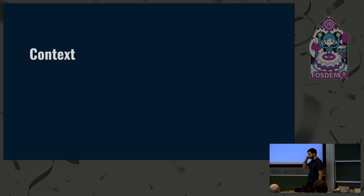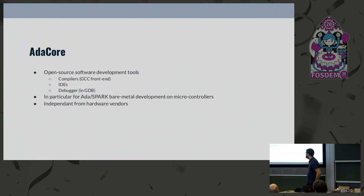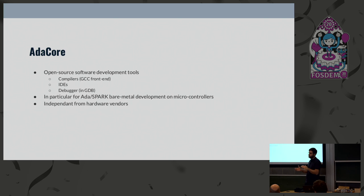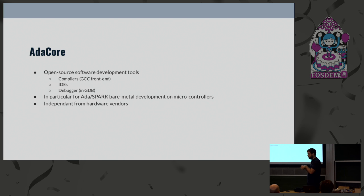What is this about? We'll start with some context, and then Corentin will explain what the project actually is. The context is that we work for an open-source software company called AdaCore. We do open-source software development tools — we contribute to GCC, GDB, we have IDEs, code coverage analysis, formal verification, and so on, particularly for the Ada and Spark programming languages. One of the targets and contexts we support for our customers and users is the really bare metal embedded platforms. We are independent from any hardware vendors, and you will see why this can be a problem sometimes.